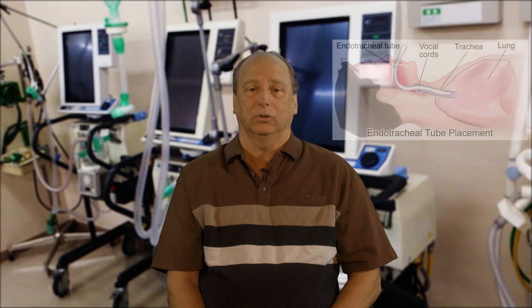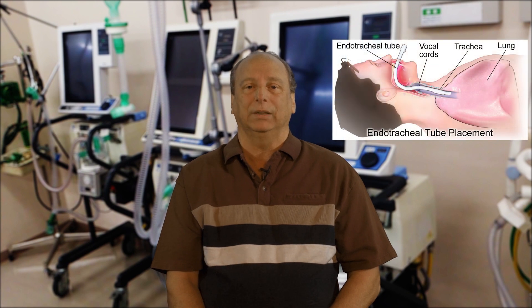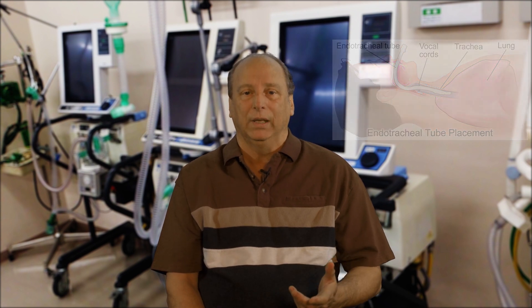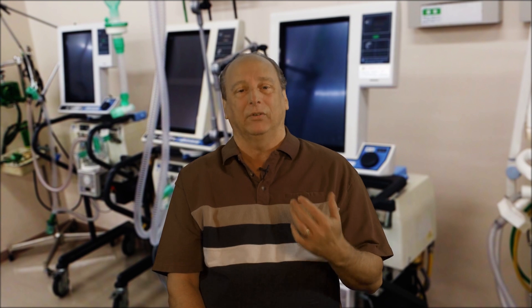The ventilator is connected to a tube called an ET or endotracheal tube. This tube goes directly into the patient's lungs. The insertion of this tube into a person's windpipe or trachea is called an intubation. In healthcare settings, the verb ventilate is often referred to as oxygenating the blood, and can also be used to describe helping someone breathe through a mechanical ventilator.